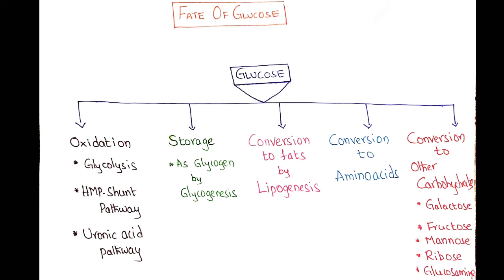Glucose can also be converted into amino acids. Additionally, glucose is directly or indirectly converted into different monosaccharides — it may be converted into galactose, fructose, mannose, ribose, xylose, glucosamines, and N-acetylneuraminic acid. Based on tissue requirements, glucose can be converted into these sugars. This is the fate of glucose.